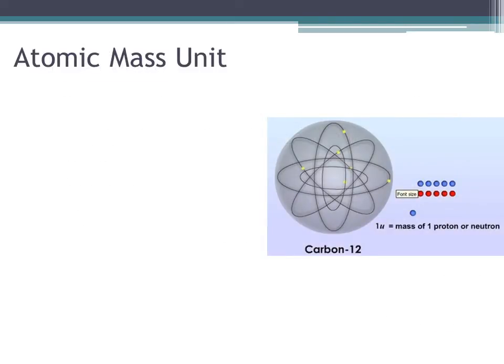Masses of atoms measured in grams are very small. An atom of oxygen-16, for example, has a mass of approximately 2.7 times 10 to the minus 23 grams. It is only in this century that scientists have been able to measure masses this small. Although we know the actual masses of atoms, for most chemical calculations it is more convenient to use relative masses.